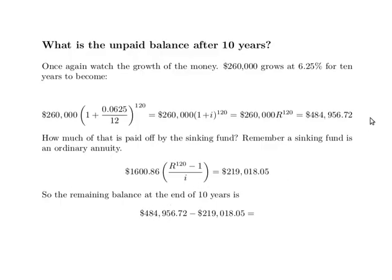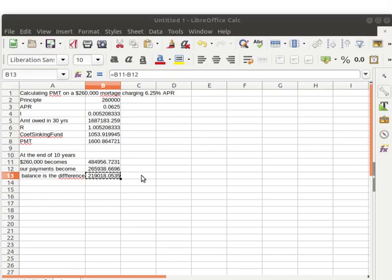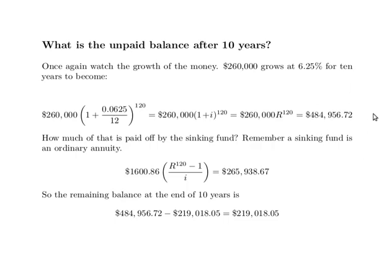Our remaining balance is the amount that $260,000 grows to via compound interest, minus the amount that our sinking fund grows to during that same period. We calculated that answer here. There's the amount that the $260,000 becomes, and there's the amount that our monthly payments become — that's just a sinking fund. We take the amount that $260,000 becomes, subtract the amount that our payments became, and that's the balance we owe at the end of 10 years.